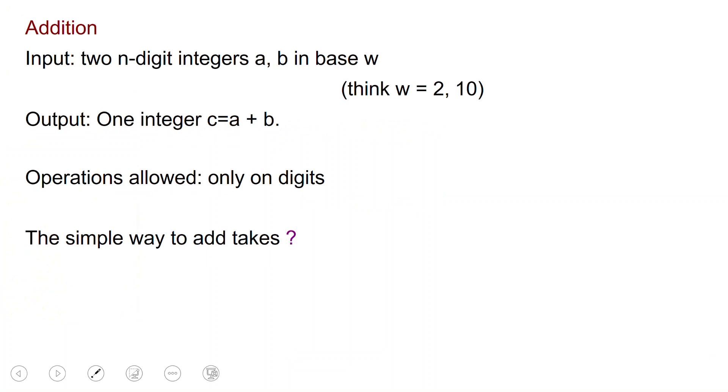Let us go back to addition for a second to set up the context. The inputs are two n-digit integers a and b in base w. We are going to be very interested in changing bases, so now we call bases w. Typically we work in base 10. Computers work in base 2.